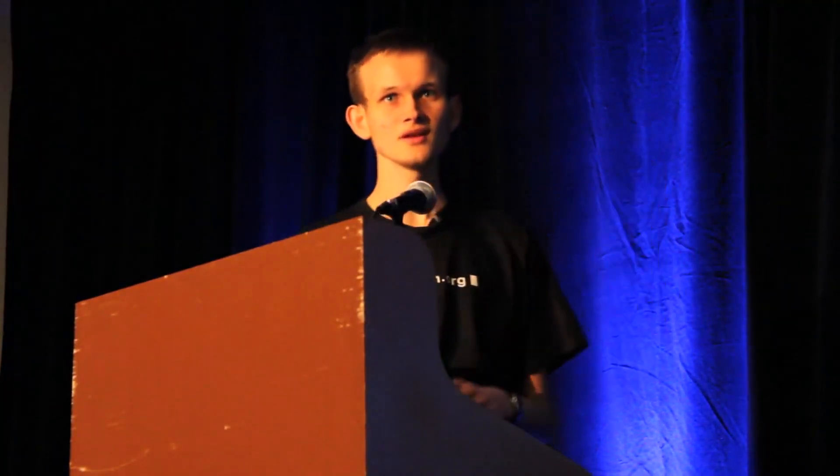Decentralized autonomous organizations. What if you could have a company whose organizational bylaws, instead of being enforced in the legal system, are enforced literally on the blockchain? The organization might have some capital — a million dollars worth of ether — and the idea is that you would need two-thirds of the organization's members to agree to do anything. That's pretty much the only rule.